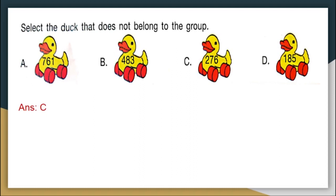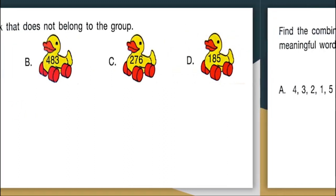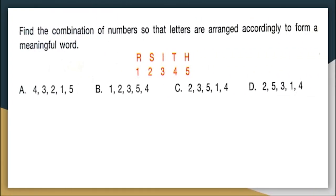Moving on to the next question: find the combination of numbers so that letters are arranged accordingly to form a meaningful word. Here each number stands for a particular letter. For example, 1 stands for R, 2 stands for S, 3 stands for I, 4 stands for T and 5 stands for H. When I arrange these numbers in a particular order, the word that I get has to be a meaningful word. I have to find out what is that order.